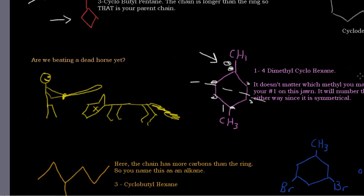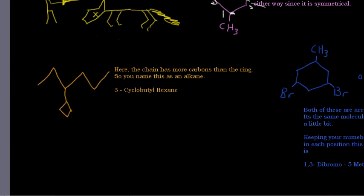Down here is 3-cyclobutylhexane. Here the chain has more carbons than the ring, so you name this as an alkane. So you have 1, 2, 3, 4, 5, 6 carbons, and you want to label this way so that this is on the third carbon. If you name this way, that would be on the fourth carbon, and that's wrong. Don't label from this direction, bad.